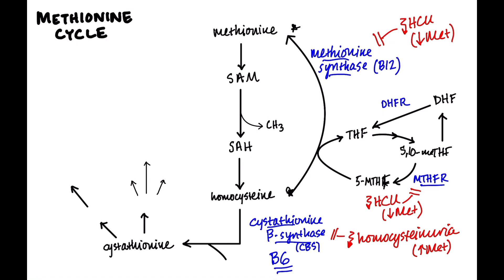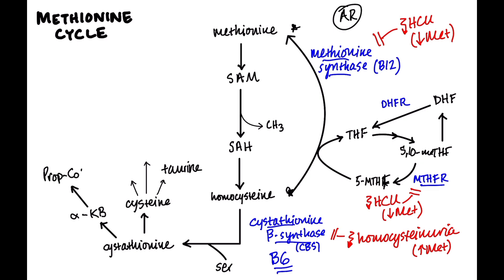You can also get homocystinuria through nutritional deficiencies — B12, folate, or pyridoxine deficiency impairs the relevant enzymes. If we're talking genetic disorders, remember all of these are autosomal recessive. Downstream, cystathionine gets converted to cysteine, which can become taurine — part of bile acids. Cystathionine can also become alpha-ketobutyrate, which becomes propionyl-CoA and joins the VOMIT pathway, ultimately leading to succinyl-CoA and the TCA cycle.